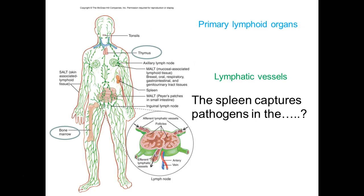All these green vessels shown here are referred to as lymphatic vessels, and these are distinctly different from our blood vessels. Our blood system is a circular, closed system, and it circulates around with the heart being the pump. The lymphatic system, on the other hand, is not circular — it starts in the tissues and it drains.